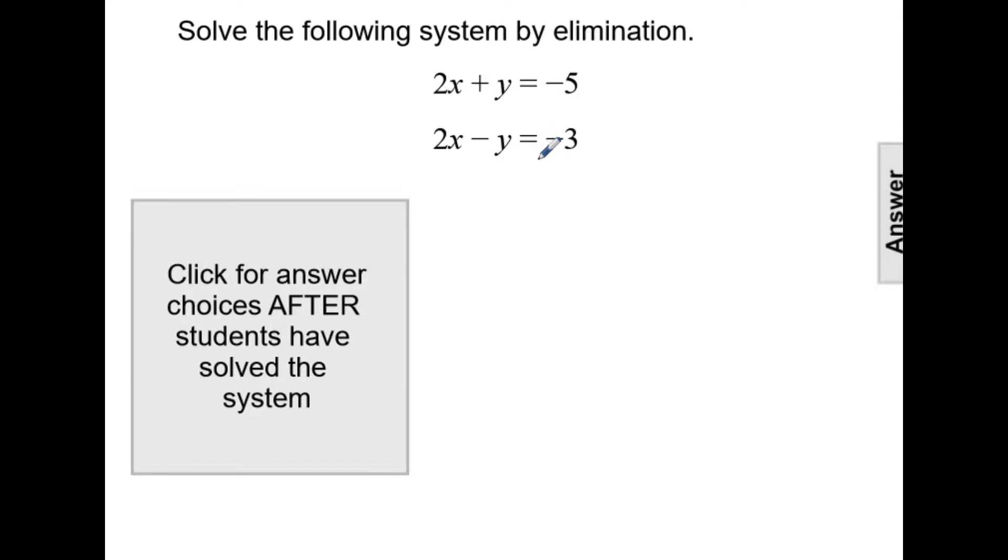We need to look at the coefficients of each variable. Here we have 2x and 2x, and we have a positive 1 and a negative 1. Looking at the y, a positive 1y and a negative 1y, which means if I add that together, it will eliminate the y variables.